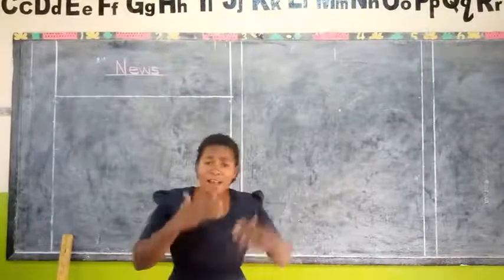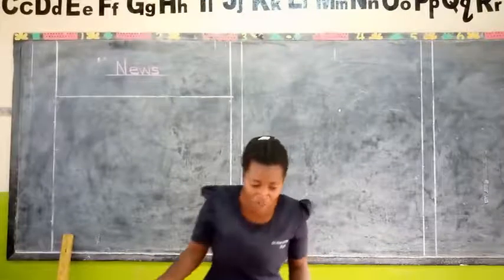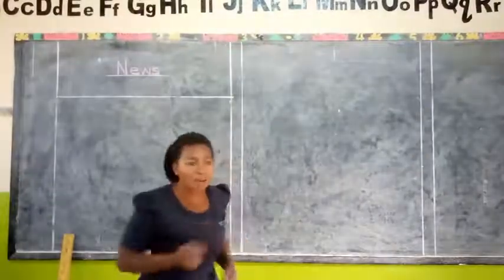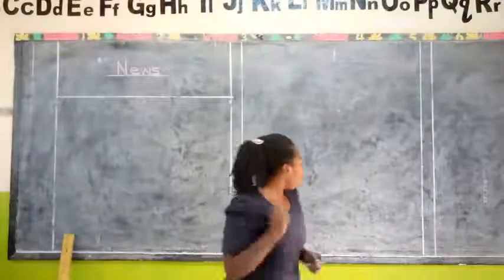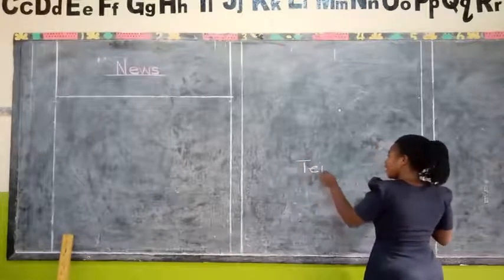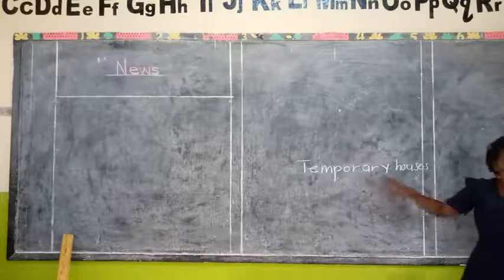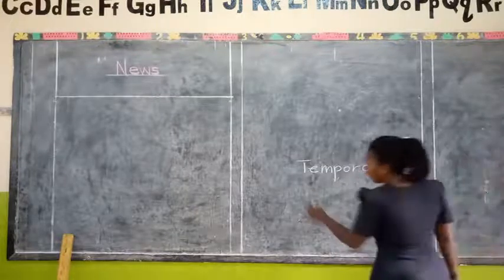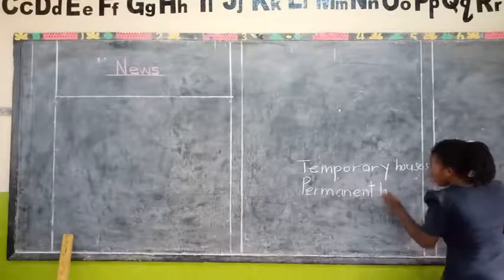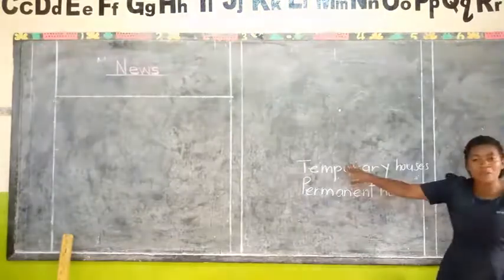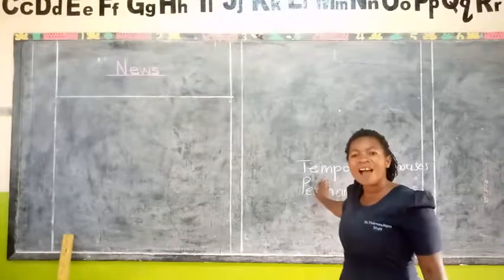In this lesson we shall first remind ourselves about the things we learned previously. First of all, we talked about the types of houses. Can one person remind us about the types of houses? Good. We say the first type of houses are temporary houses.